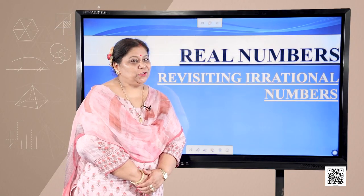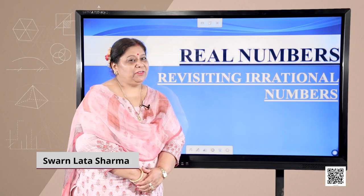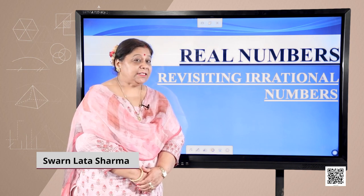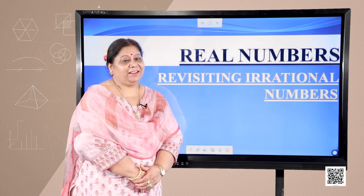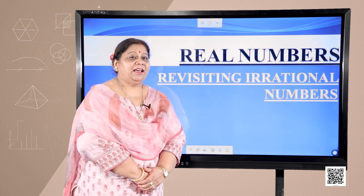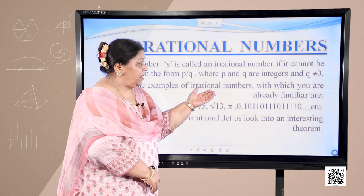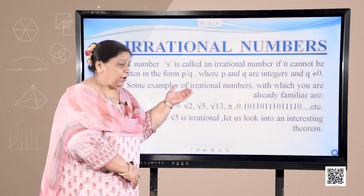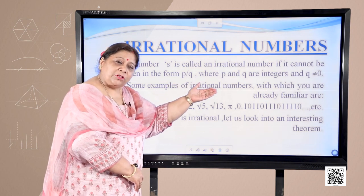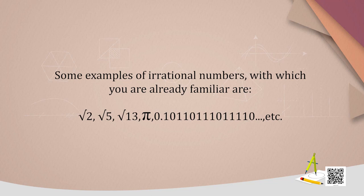Hello students, let's continue with the chapter Real Numbers. In the previous episodes we have learned about Euclid's division lemma and the fundamental theorem of arithmetic. Today we will discuss irrational numbers. A number is called an irrational number if it cannot be written in the form p upon q, where p and q are integers and q is not equal to 0. Some examples of irrational numbers are √2, √5, √13, π, and 0.10110110111... etc.